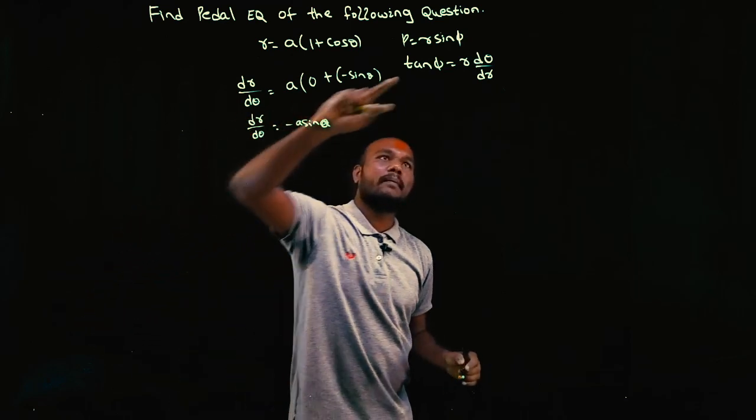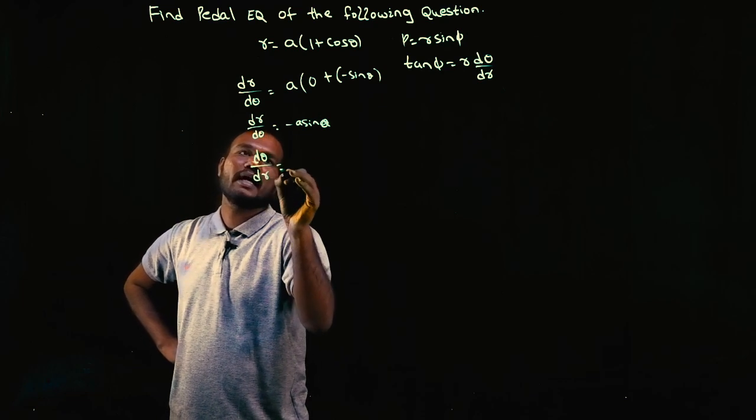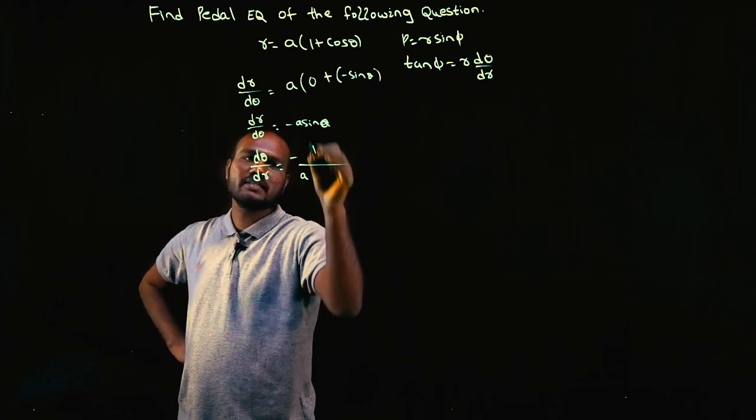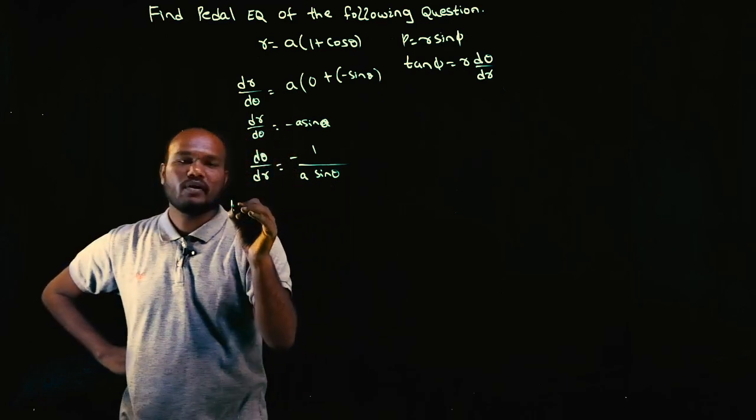But I'm not interested in dr by d theta, I'm interested in d theta by dr. So d theta upon dr is the reverse: minus A becomes 1 by A, sine theta becomes 1 by sine theta.